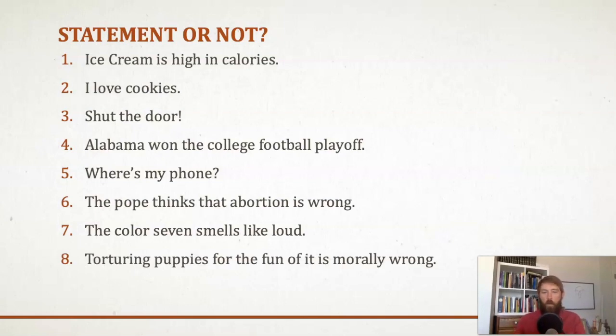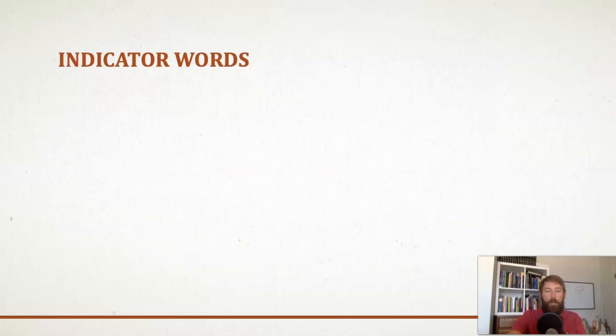Finally, 'torturing puppies for the fun of it is morally wrong'—this one, if this were a class in ethics, would be controversial because there are some theories of ethics that say that moral sentences like this one that claim that something's right or wrong are not actually statements because they don't have a truth value. But we're going to table that. For the purposes of this class in logic, we're going to count these as statements because it's obvious—at least to me—this one is obviously true, that torturing puppies for the fun of it is morally wrong. So we're counting this one as a statement. All right, finally, in order to recognize an argument, one of the things that you can do is look for indicator words.